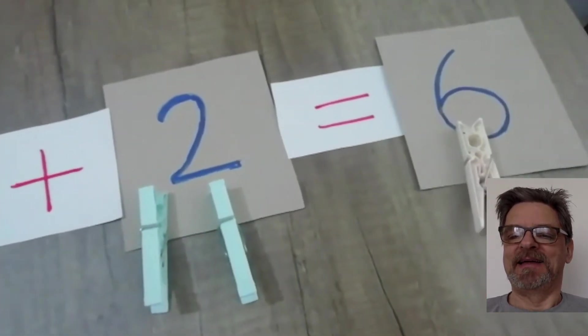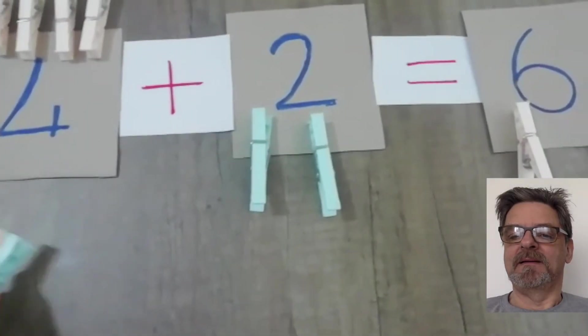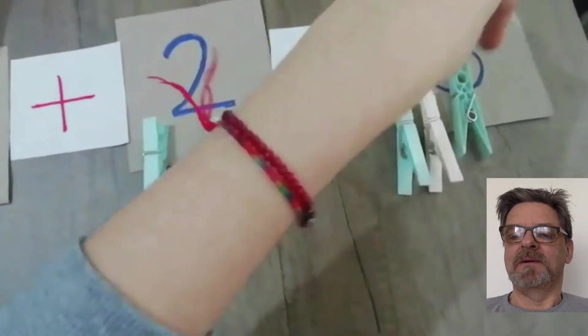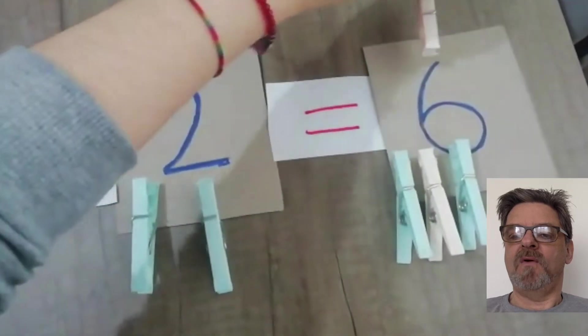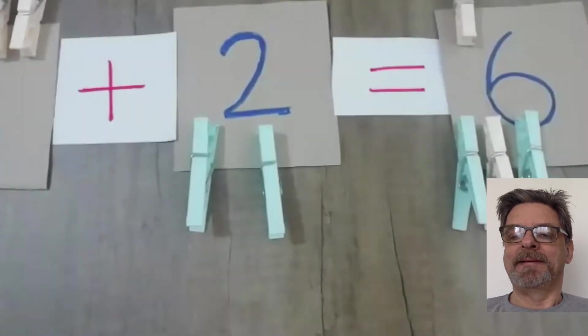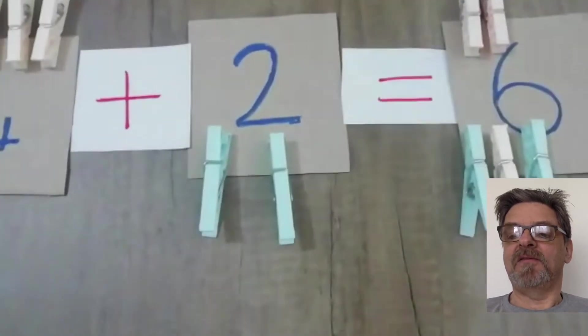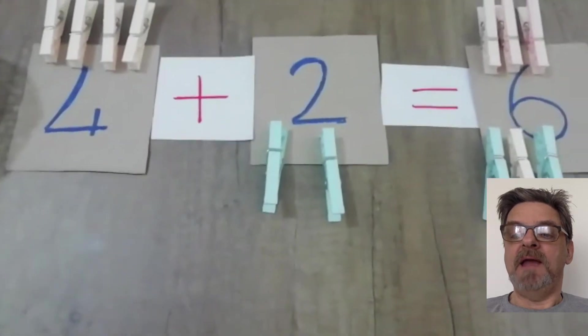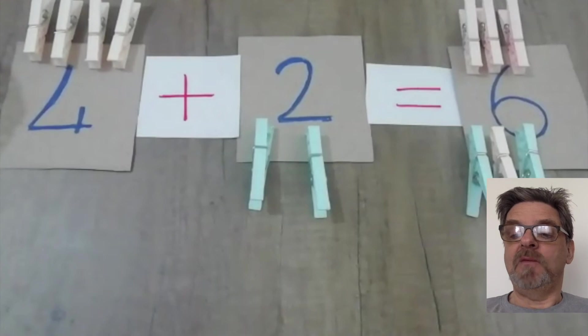4 plus 2 equals 6. 1, 2, 3, 4, 5, and 6. The pegs are white and green—green and white pegs. So 4 plus 2 equals 6. Thank you for watching. See you later.